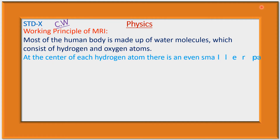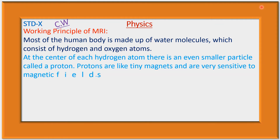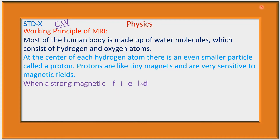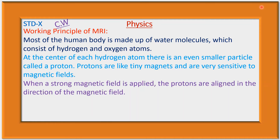At the center of each hydrogen atom there is a particle called a proton. Protons are like tiny magnets and are very sensitive to magnetic fields. We know moving charge acts like a magnet, so protons act like magnets. When a strong magnetic field is applied, the protons are aligned in the direction of that magnetic field.